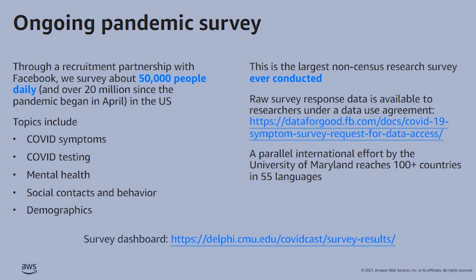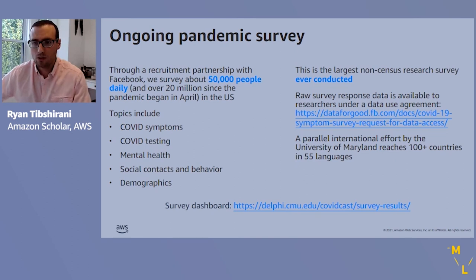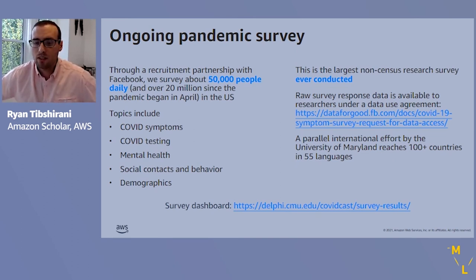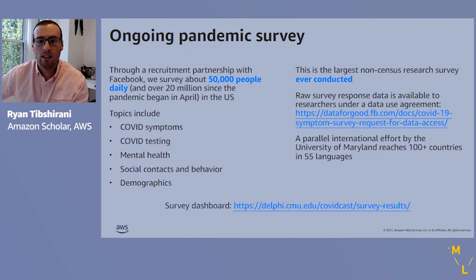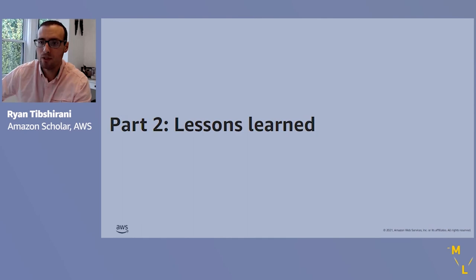The survey covers a bunch of things — you saw several indicators, and it has many others. This survey is massive, receiving about 50,000 responses per day and over 20 million since the pandemic began in April. If you want access to raw de-identified individual response data, you can fill out a data use agreement and receive access if you work at a university or non-profit. Otherwise, anybody can receive the aggregate data available in our API.